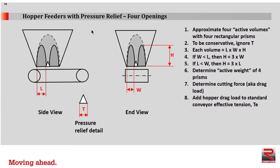Now let's review how to decrease hopper pressure even more. If changing one opening to two openings is good, then changing one opening to four openings may be even better — and in fact it is. You simply approximate four active volumes with four rectangular prisms using the techniques learned previously. To be conservative, continue to ignore T and calculate volume as length times width times height. Once we have the four volumes, we determine the active weight, multiply by 0.5 to get the drag load, and add that hopper drag load to the standard conveyor effective tension TE so that power can be determined.